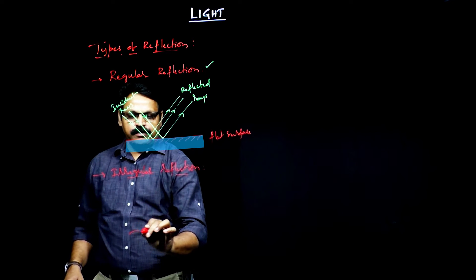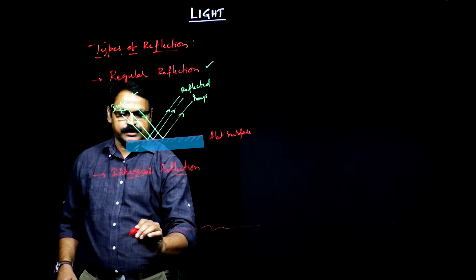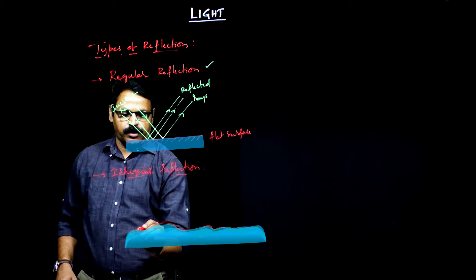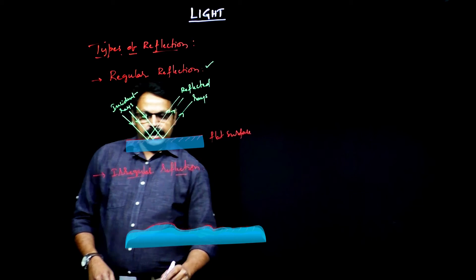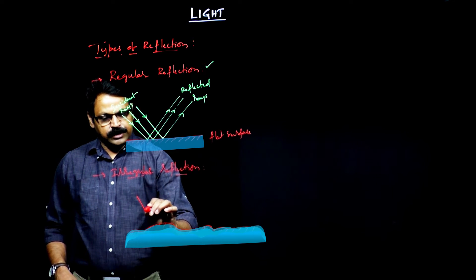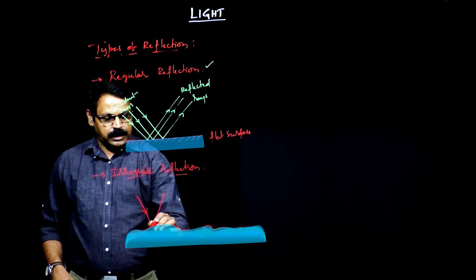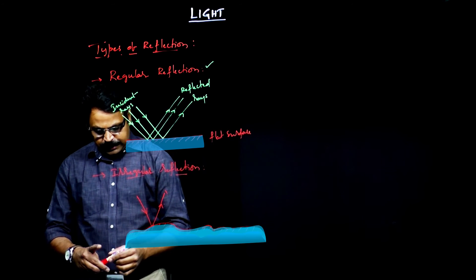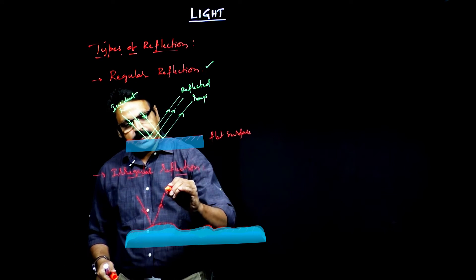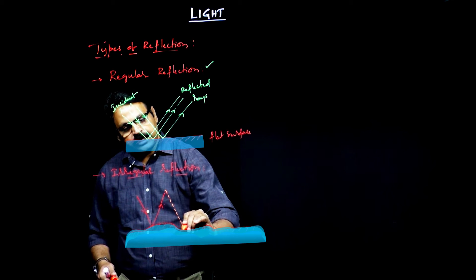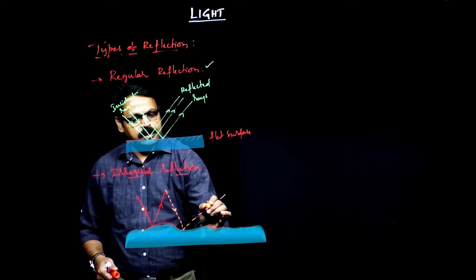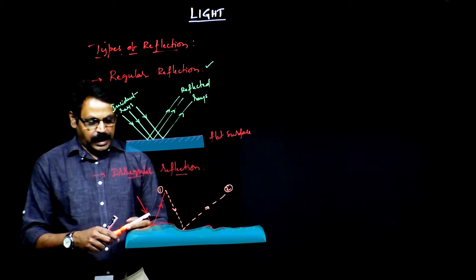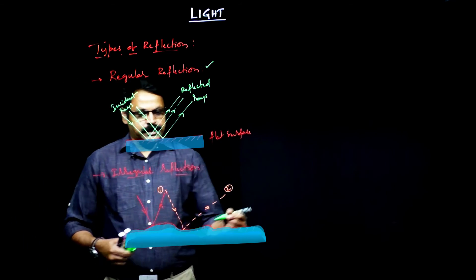Unlike that, if you have an irregular surface — a boundary which does not have flatness — then the reflected rays behave differently. For example, a ray incident at one point is reflected in one direction, but another parallel ray incident at some other point may be reflected in a different angle. That means ray 1 is not parallel to ray 2, and in that case you call it as irregular reflection.